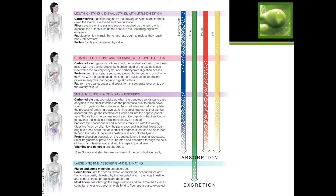This picture breaks down where digestion happens for each macronutrient and fiber. Starting with carbs: because of your saliva, you get some digestion of carbs in the mouth. Once it hits the stomach there is no more digestion until it hits the small intestine, where it's completely absorbed. Skipping to protein: there is no digestion of protein in the mouth, but protein digestion starts in the stomach and continues all the way through the small intestine.